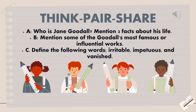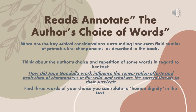We're going to learn more about the author herself, mentioning facts about her life and influential works. We'll also move on to vocabulary words, defining them in context by reading the text and looking for these words, then sharing our understanding through written and spoken practices. We'll read and annotate the author's words, asking ourselves: what are the key ethical considerations surrounding long-term field studies of primates like chimpanzees as described in the book? We'll think about the author's choice of words, repetition, and vocabulary, finding words that relate to human dignity and our essential question. Finally, we'll answer the challenging question: how did Jane Goodall's work influence conservation efforts for the protection of chimpanzees, and what are the current threats to their survival?